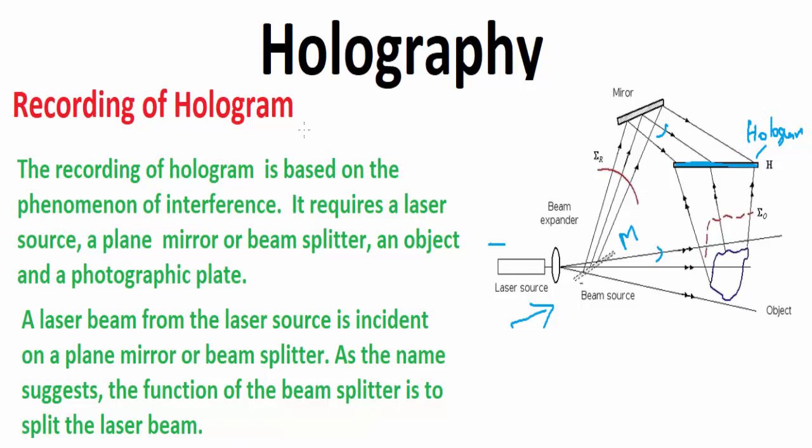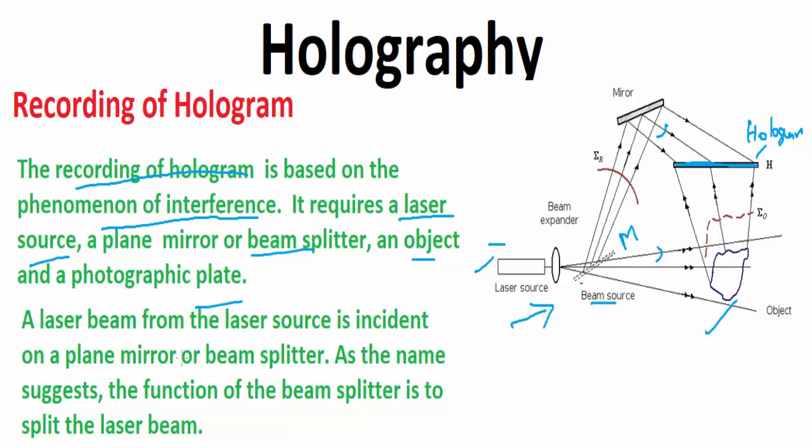The recording of hologram is based on the physical phenomenon of interference. It requires a laser source, a plane mirror or beam splitter—you can see this—an object, and a photographic plate. This one is the object and so is the photographic plate.